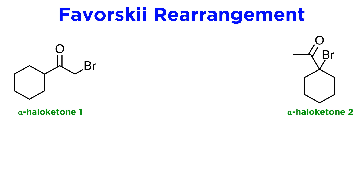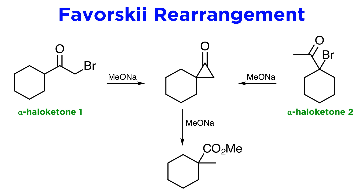This mechanism is consistent with the fact that isomeric alpha-halo ketones yield the same carboxylate, such as here where the structural difference between these two starting materials doesn't matter, because enolate attack onto the bromide gives the same cyclopropanone in both cases, although it is too strained and unstable to be isolated.